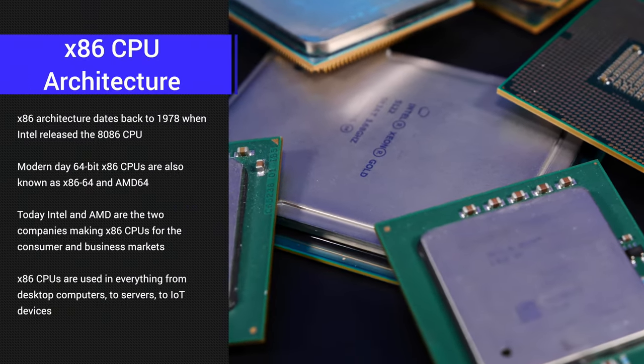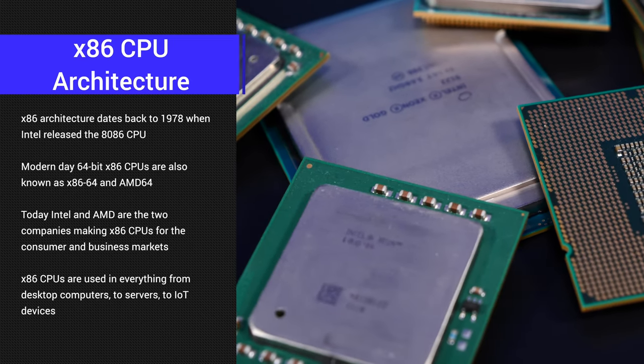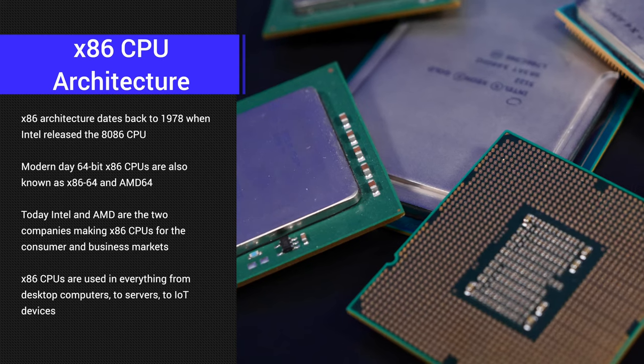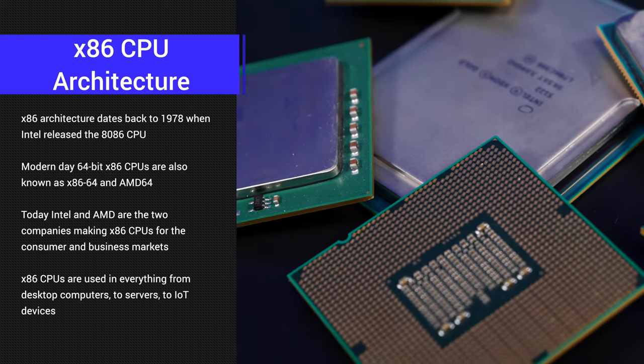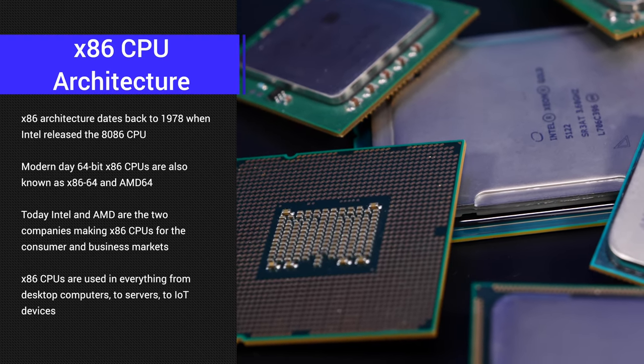Computer architecture is the logical place to start, because knowing the benefits and limitations of a CPU architecture will have an effect on the direction you decide to go. In the world of computing, there are two major CPU architectures that we use every single day: x86 and ARM. Let's start with x86 CPUs. You may not have heard the term x86, x86-64, or AMD64 before, but you've undoubtedly heard of Intel and AMD, the two major x86 CPU manufacturers today.